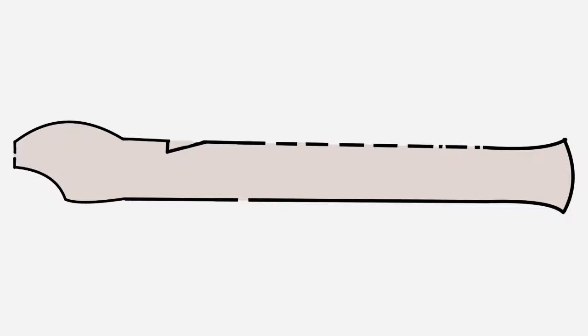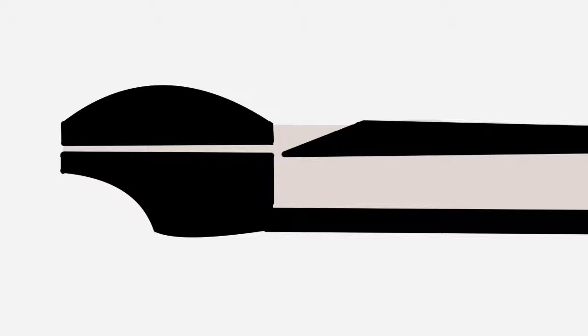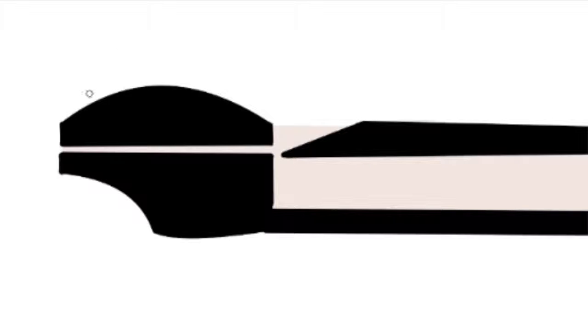Well, if we take a recorder and split it lengthwise down the middle, this is what the mouthpiece would look like. When you blow air into this end of the recorder, the air travels down this narrow passage until it reaches this sharp edge here, called the labium.